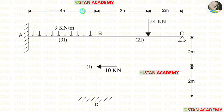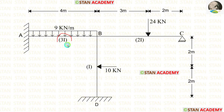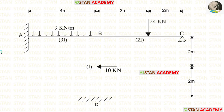The length of AB is 4 meters, the length of BC is 5 meters, and the length of CD is 4 meters. The moment of inertia for AB is 3I, for BC is 2I, and for BD is I. This frame is a non-sway type frame because the fixed support at point A will not allow any horizontal displacement.